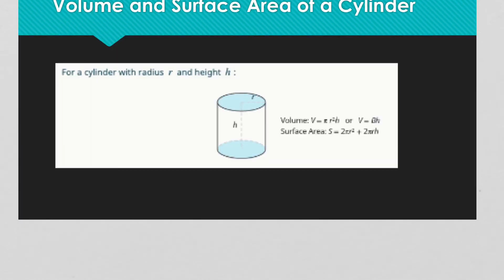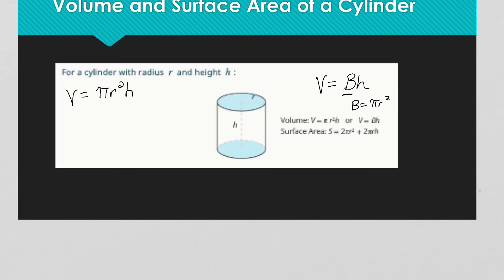The volume is equal to π times your radius squared times your height. Another way they write this is V = B × h, where big B stands for the area of the base — so B means π × r². Just be prepared that if you see a big B, that means you want the area of that base.